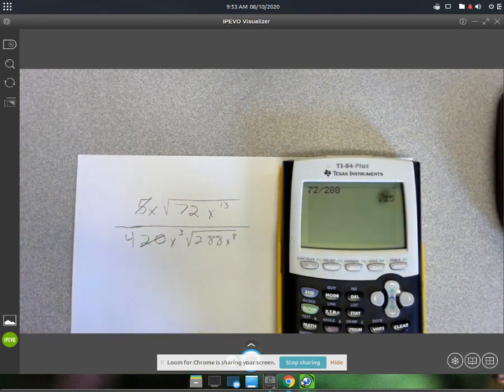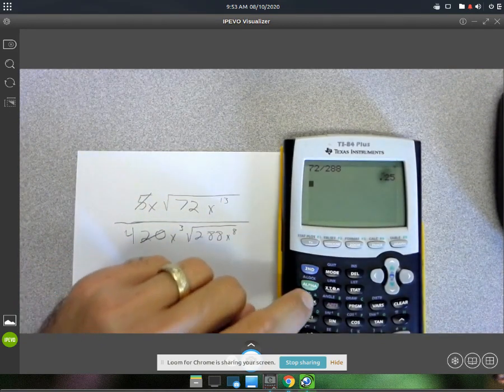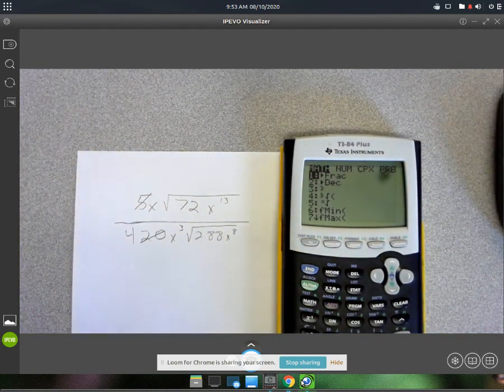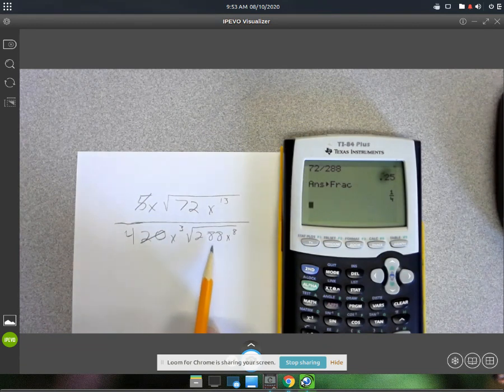And then we're going to convert that to a fraction. So math, click the math button here, and it's that first option, convert to a fraction. So it simplifies down to 1 fourth, so that would leave us a 4 in the denominator, which is very good, because 4 is a perfect square.